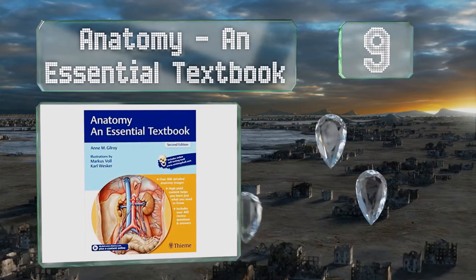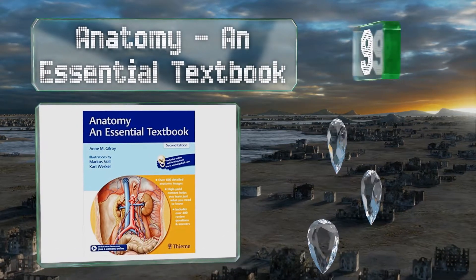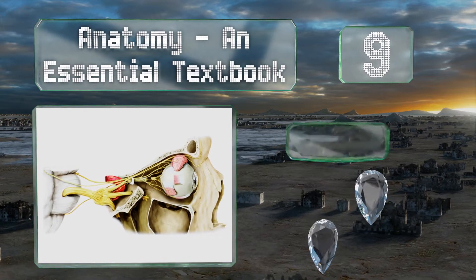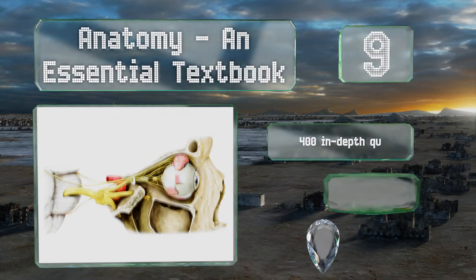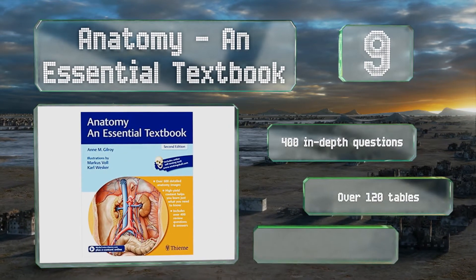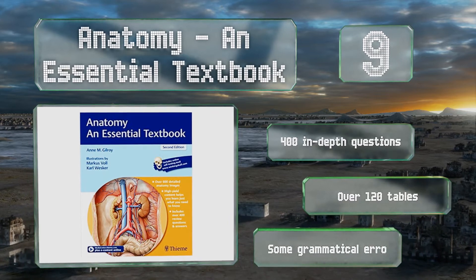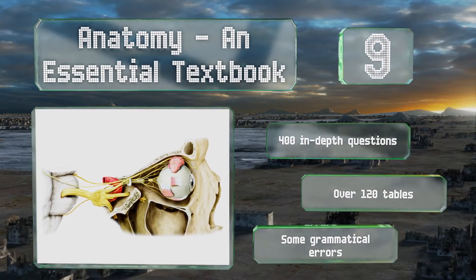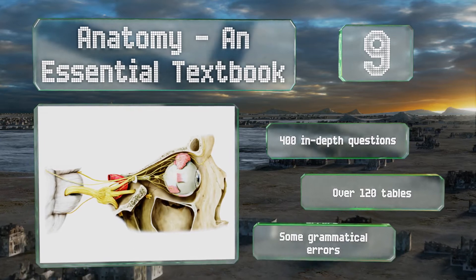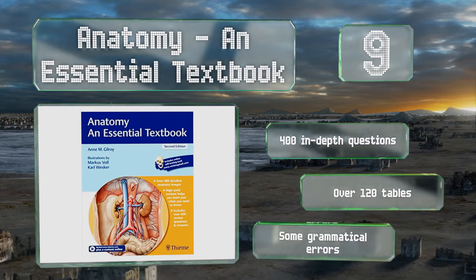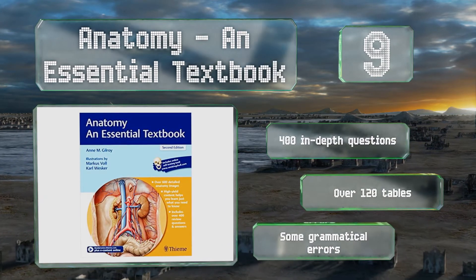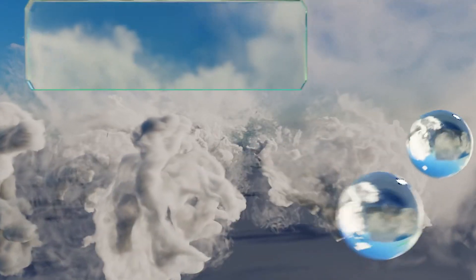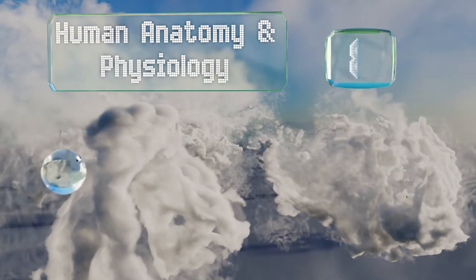At number nine, Ann M. Gilroy's Anatomy: An Essential Textbook is an illustrated review that uses an easy-to-manage bullet point style, yet is packed with everything needed to gain a solid grounding in the subject. It features more than 650 images plus complimentary online resources. It contains 400 in-depth questions and over 120 tables, but it also contains some grammatical errors.